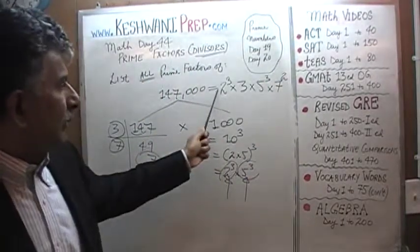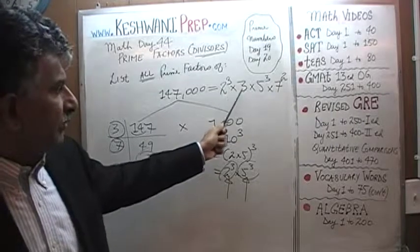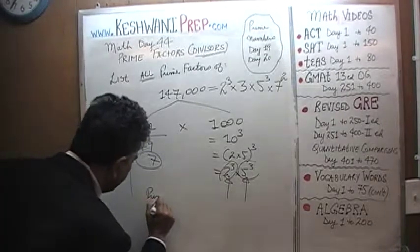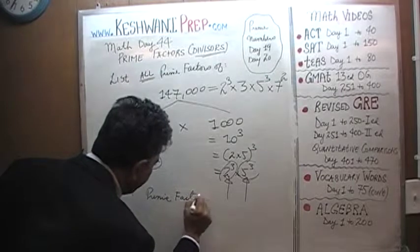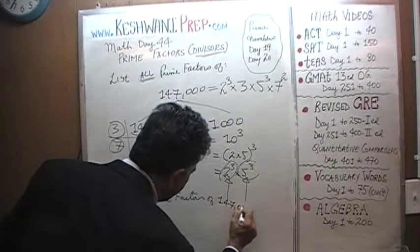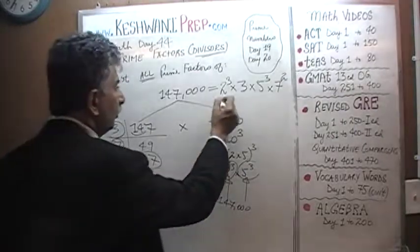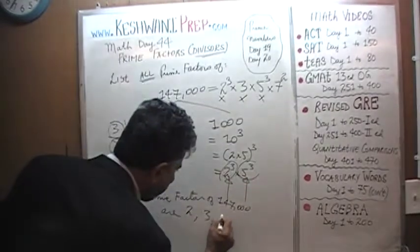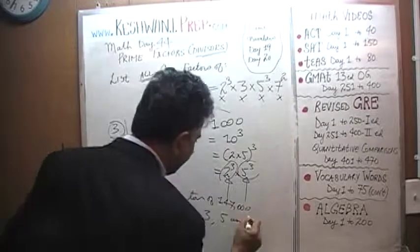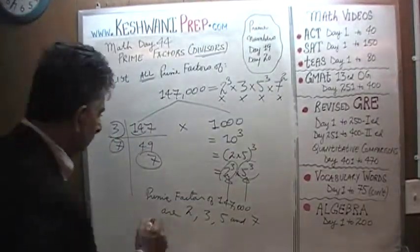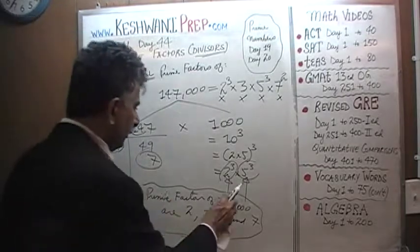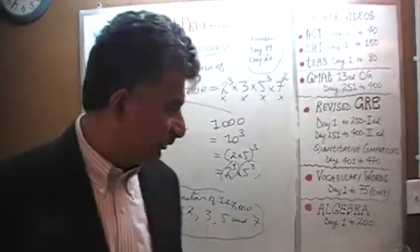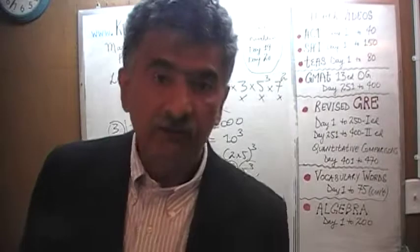147,000 is the product of 2 cubed times 3 times 5 cubed times 7 squared. Therefore the prime factors of 147,000 are 2, 3, 5, and 7 — four prime factors.